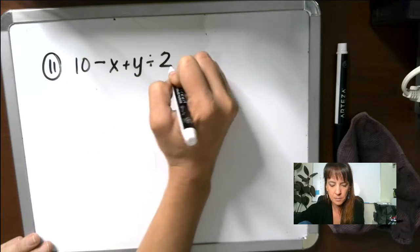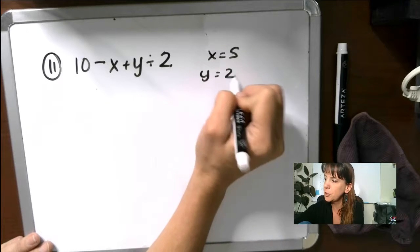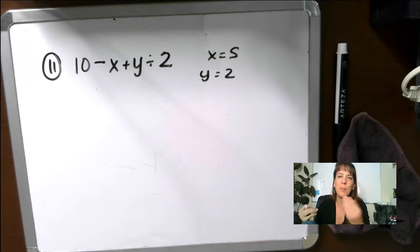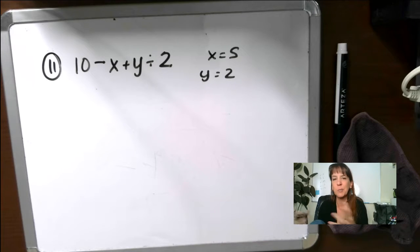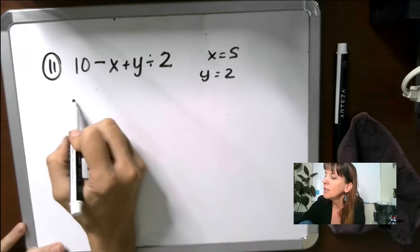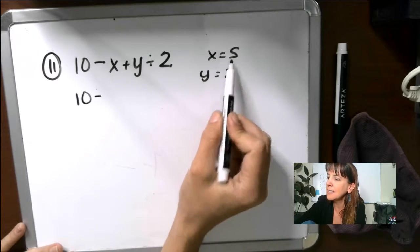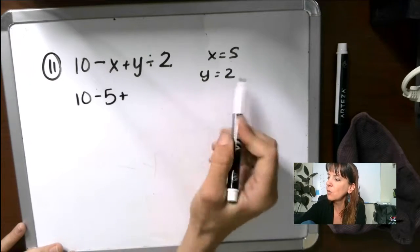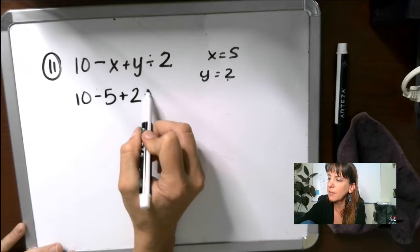All right. So this is number 11. We have X equals 5, Y equals 2. And back at the start of the video, I said, oh, put some brackets in and then put parentheses. Every time there's a variable, you don't have to do that if you don't want to, but it is kind of helpful. So 10 minus X is 5 plus Y is 2 divided by 2.